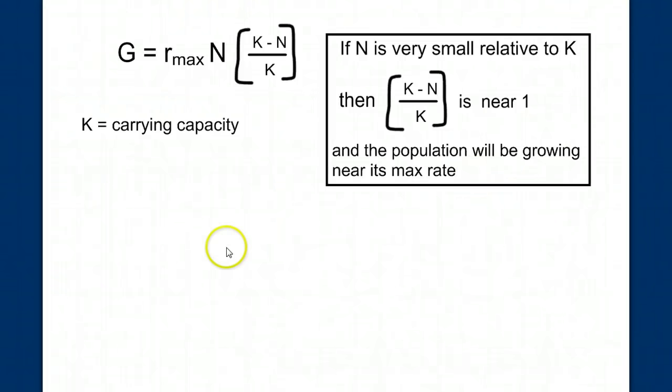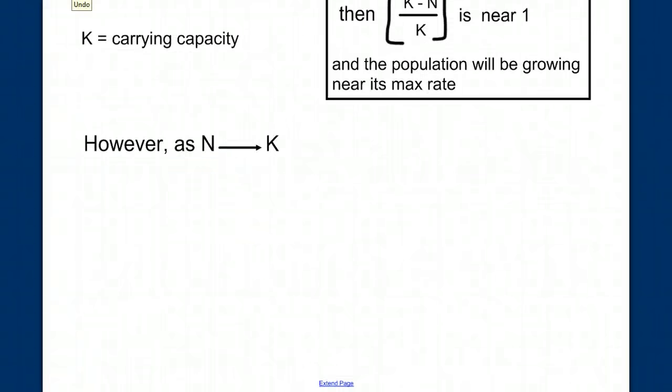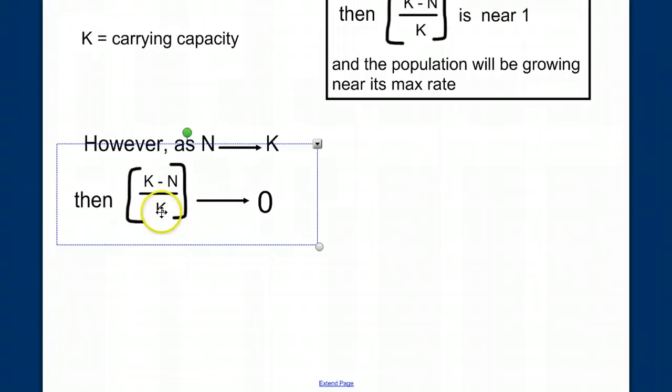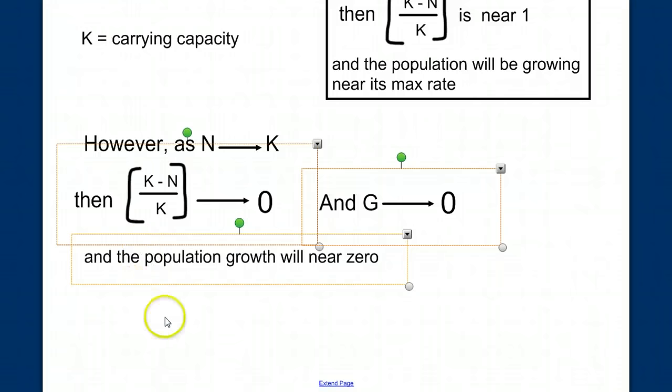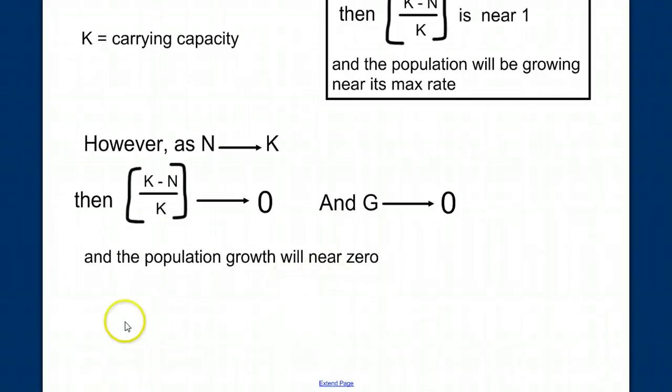But more interesting is to see what happens as n approaches K. As n approaches K, then this factor, K minus n divided by K, approaches 0. And therefore, G approaches 0. And therefore, the population growth will near 0.